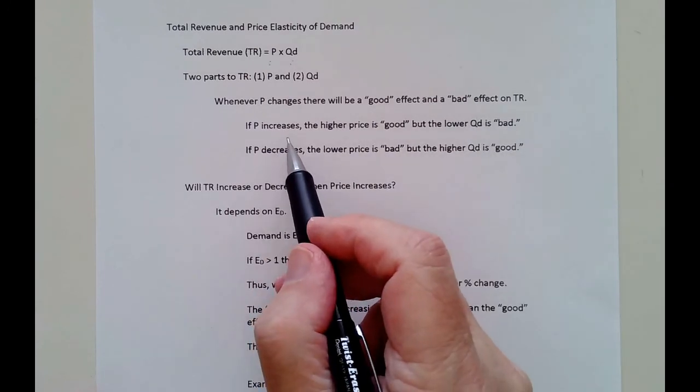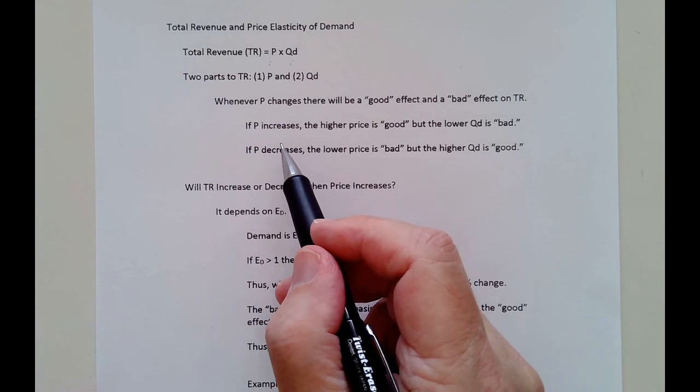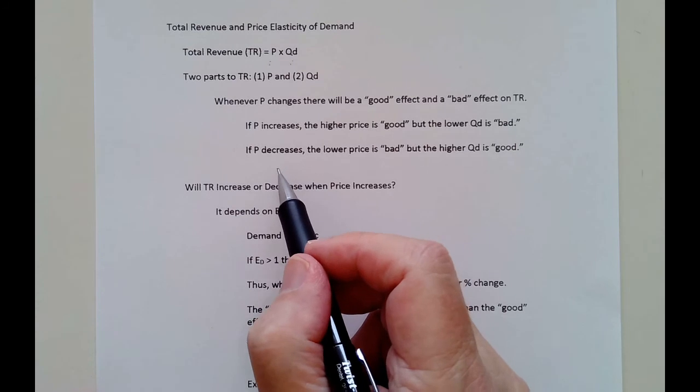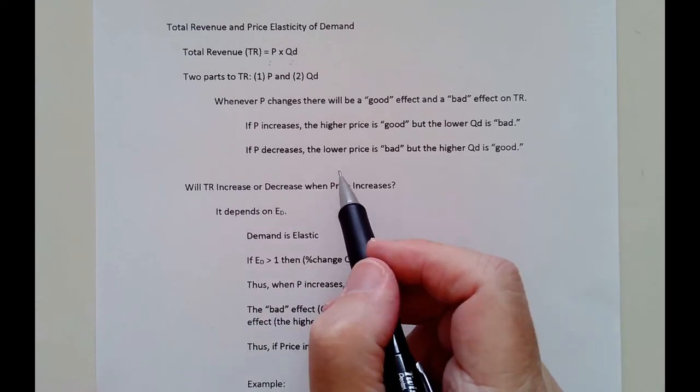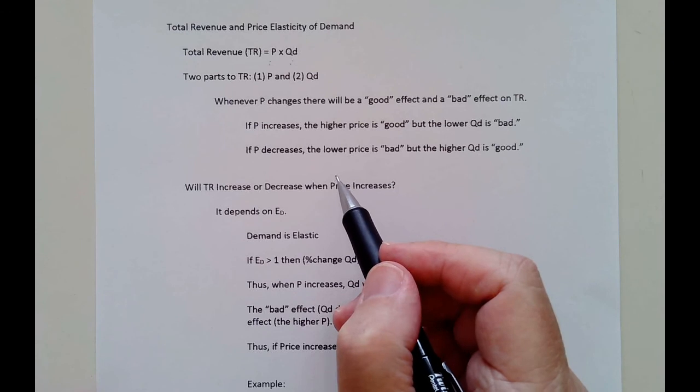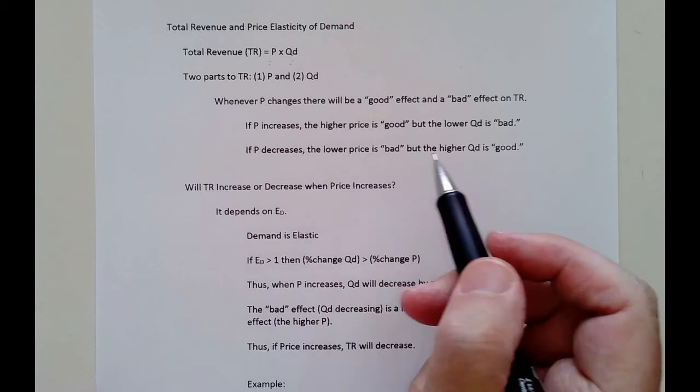And so whenever you change your price, there's going to be what I like to call a good effect and a bad effect on revenue. If the price increases, then that's good. Every one you sell, you get more. But there's going to be a bad effect, and that is that you're going to sell less. If you drop your price, the good effect is that you're going to sell more. But every one you get, you get less money. So whenever you change your price, it's not always win-win. You're going to have a good effect and a bad effect. So do you want to increase your price, or do you want to decrease your price? It depends on what the elasticity is.